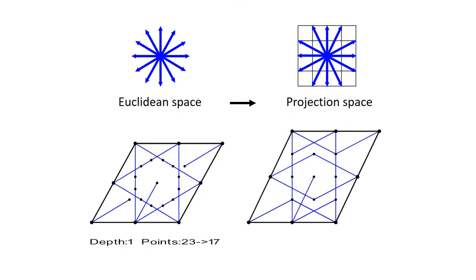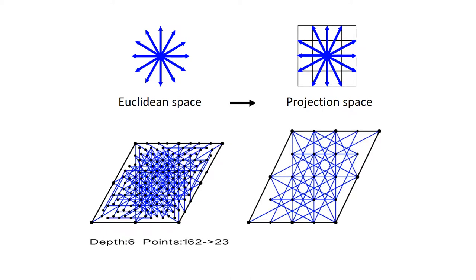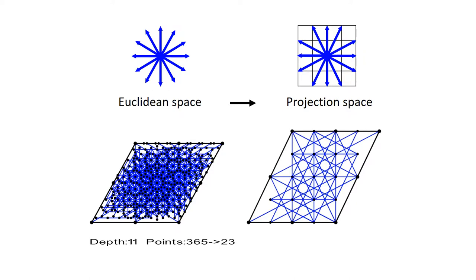our main innovation is to take a linear projection such that many different Euclidean positions are mapped to a single one. This enabled us to enumerate potential tile placements very efficiently.